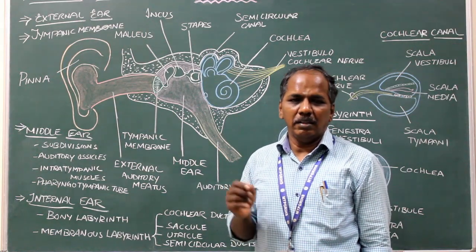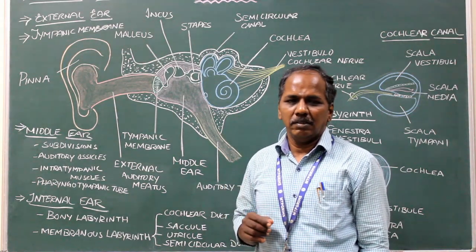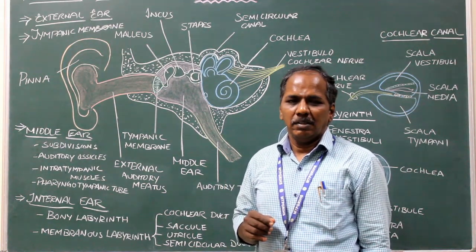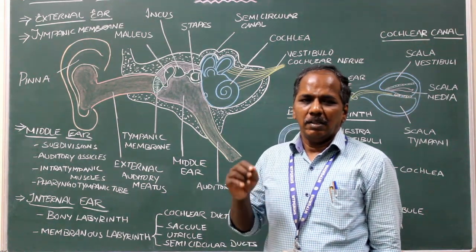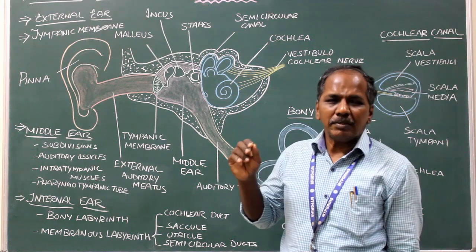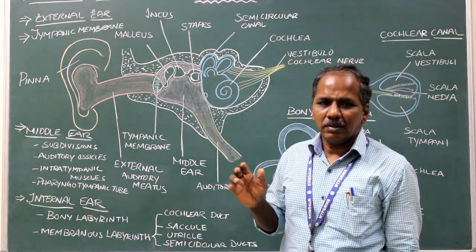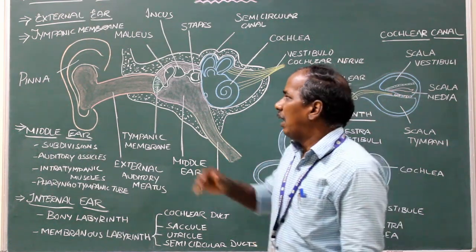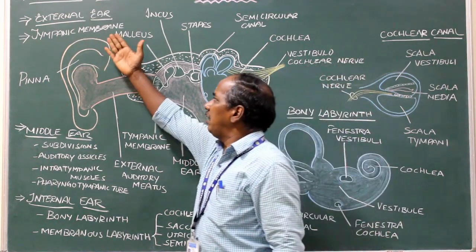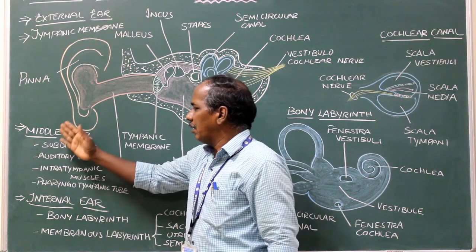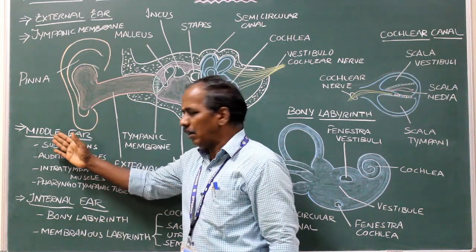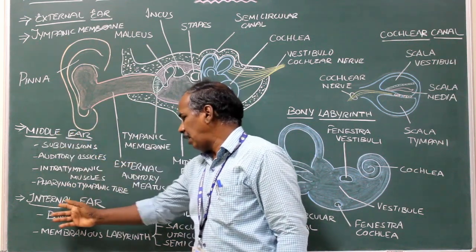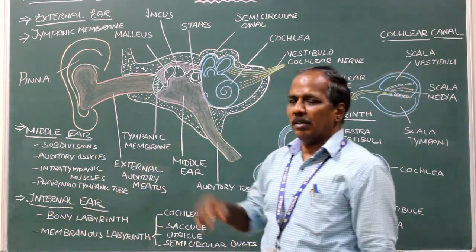Structure of ear. The ear is divided into three parts: external ear, middle ear, and internal ear.